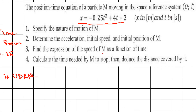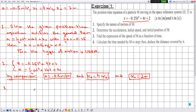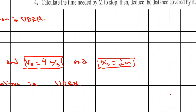For number three, we find the expression of the speed of M as a function of time. Since the motion is UDRM — a special case of UVRM — the speed changes as the particle decelerates. The general expression for speed in UVRM is v = at + v₀.